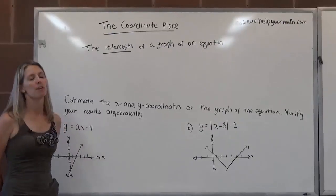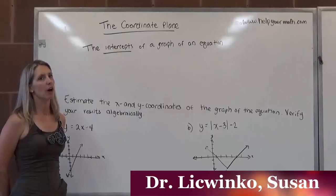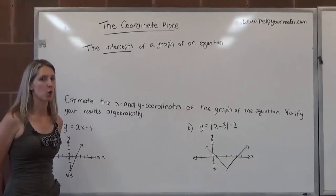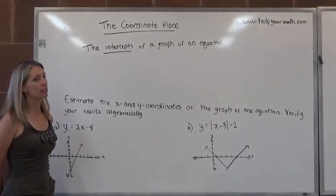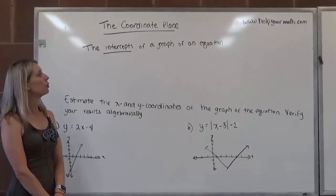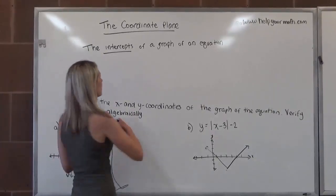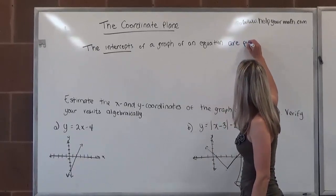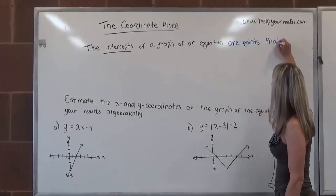In this video, we're going to talk about the intercepts of the graph of an equation. There are two different types of intercepts that we talk about in coordinate geometry. There are the x-intercepts and the y-intercepts. Intercepts in general are the points that lie on the axes — those are the points that lie on the axes.